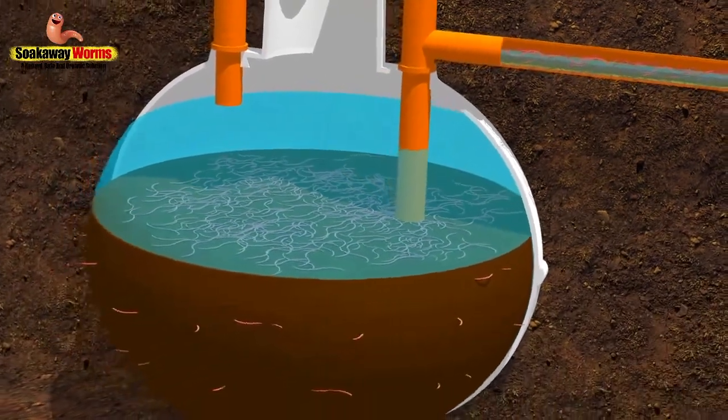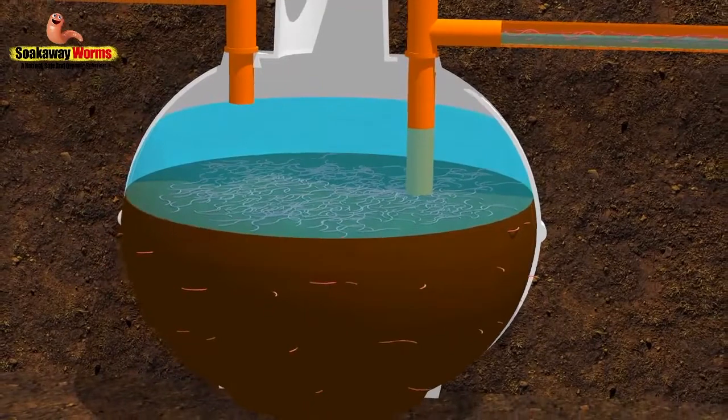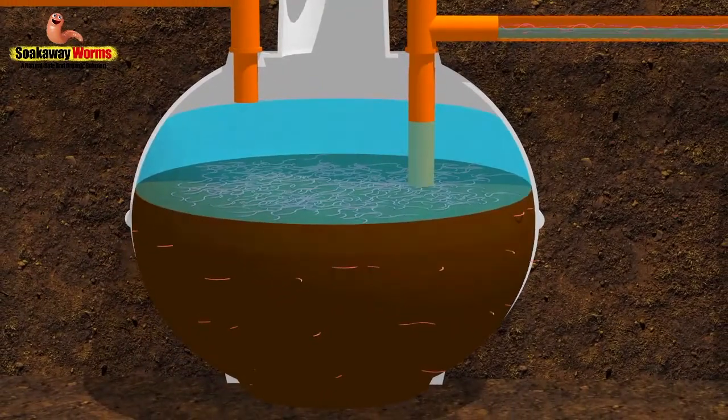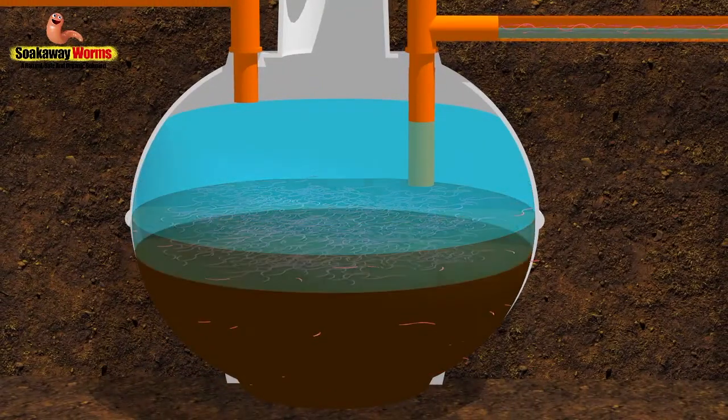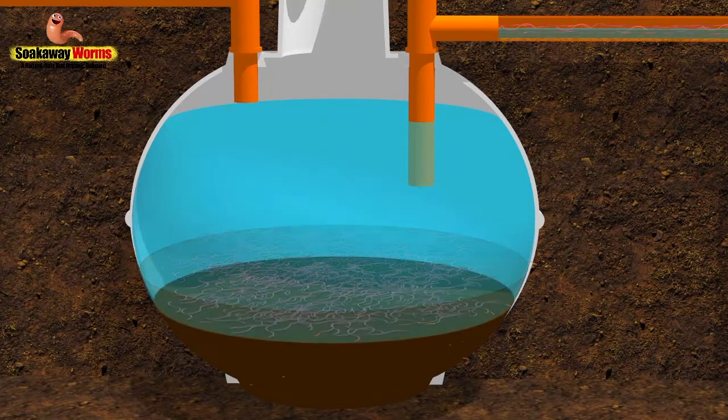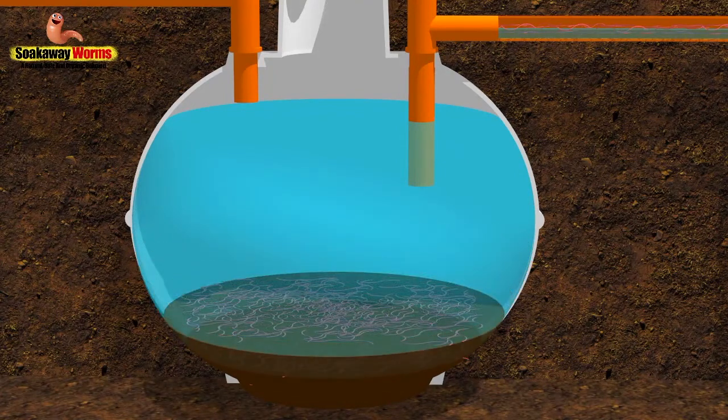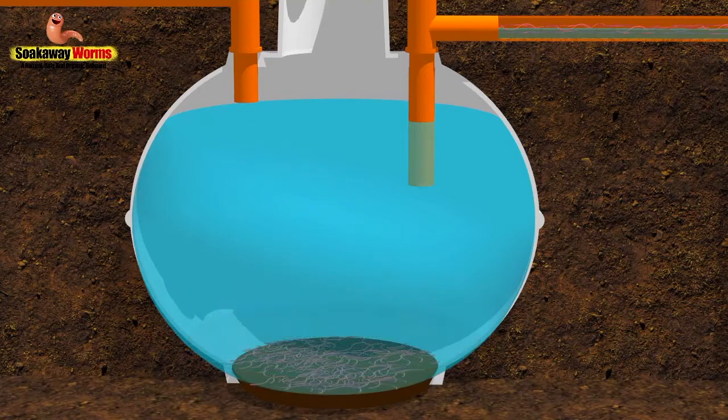Soak away worms will also save you hundreds of pounds in septic tank emptying costs. Because they eat all the fat and the grease and the sludge in the septic tank, you never need to get it emptied again because there's no sludge left to suck out.